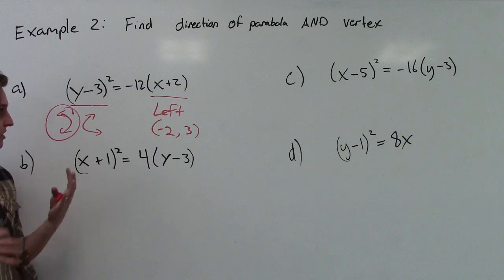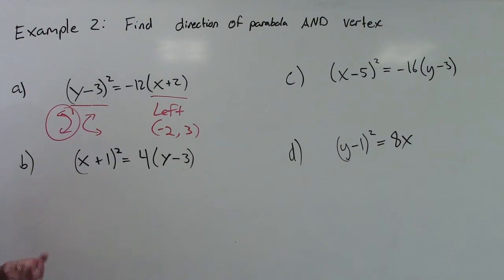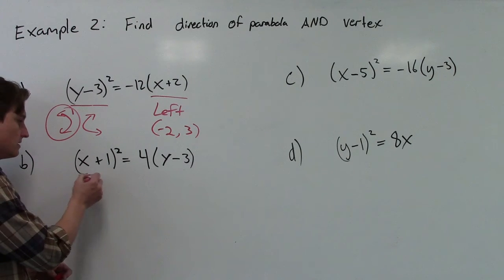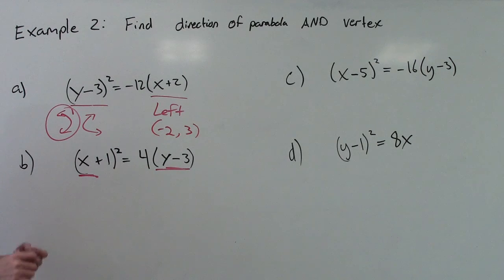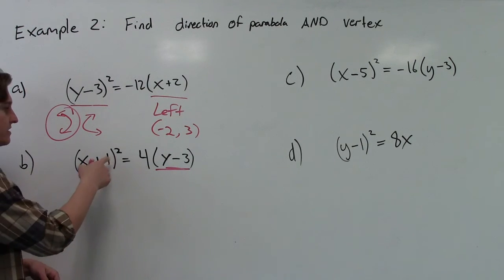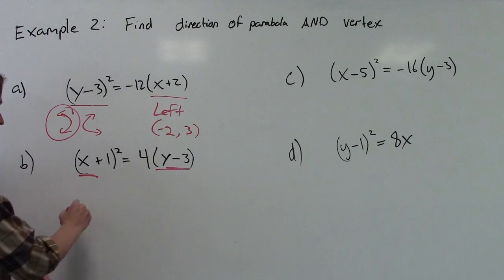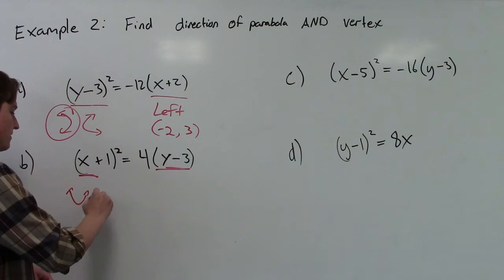In this next one here, again, we're going to start with direction, and we have to look for the squared variable. So here's the x-piece, here's the y-piece, here's our 4p part in focal form. Notice the x is being squared here, so this is either going to open up or down.